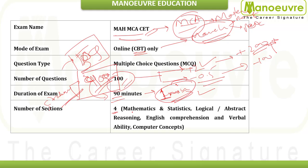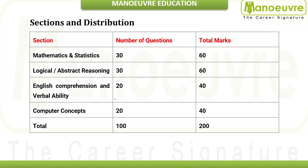The 100 questions are divided into 4 sections: mathematics and statistics, logical and abstract reasoning, English comprehension and verbal abilities, and computer concepts. Computer concepts is basically graduation-level material — you've already studied it — so those marks are very scoring and you should definitely secure all of them.